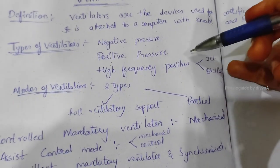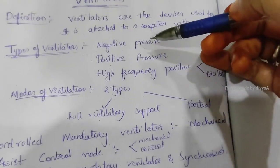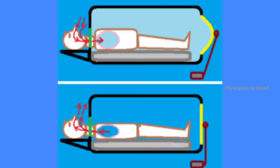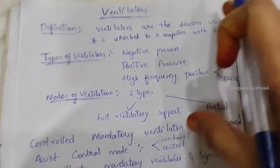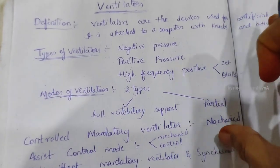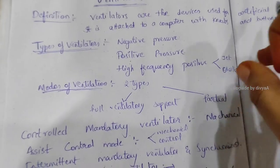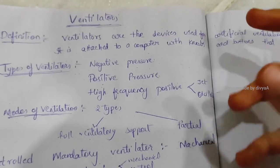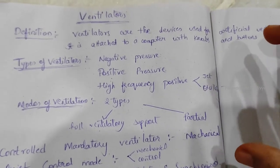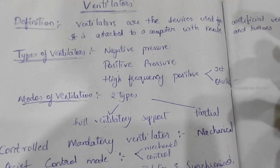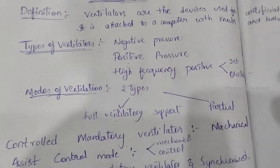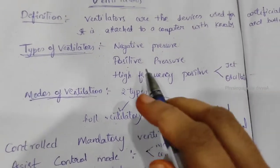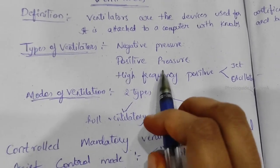Negative pressure ventilator: the whole body below the neck is kept in a large negative tank, and a negative pressure is set up in the tank. This induces pressure so that the patient breathes through the mouth, driven by the pressure set up in the tank below the neck.